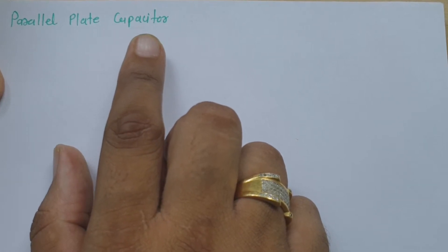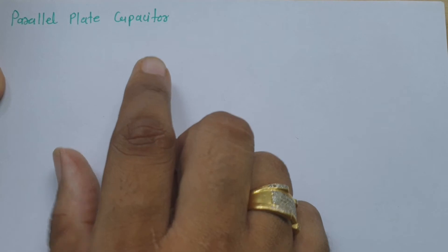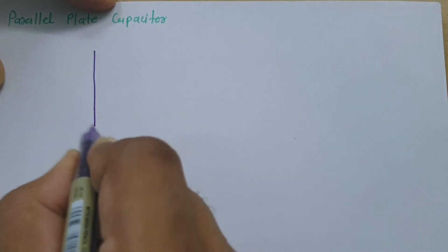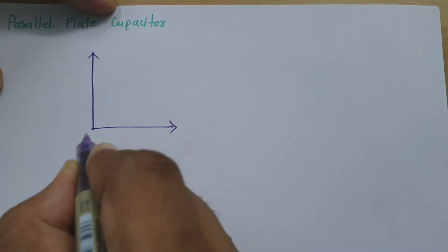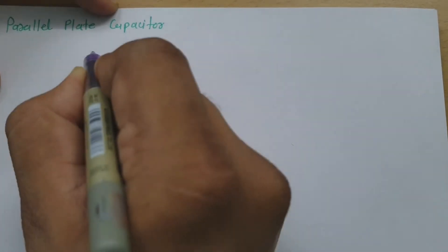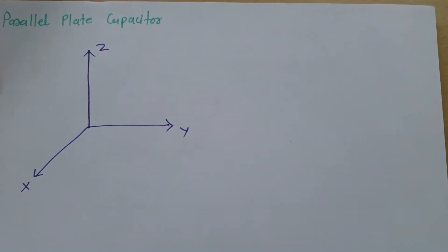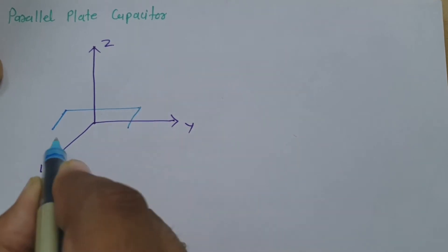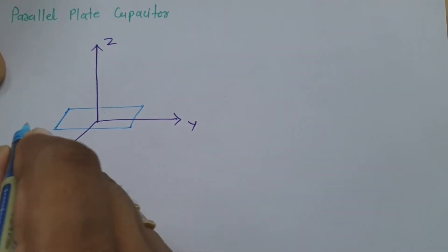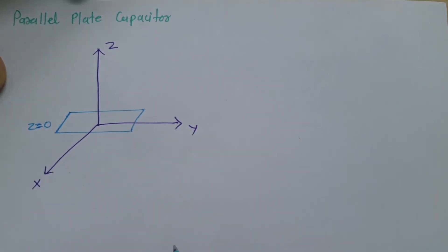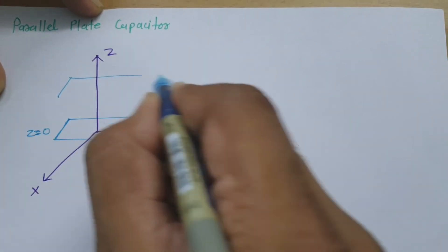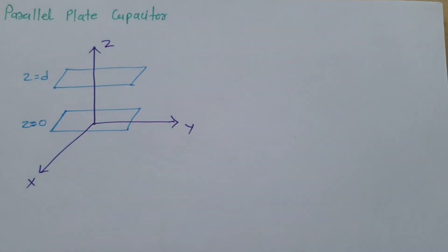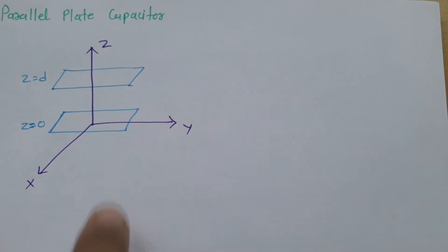Then I will show you how to calculate capacitance due to two parallel plates. Let us look at the geometry first. I am showing you the Cartesian coordinate system — this is x, this is y, and this is z. In this Cartesian coordinate system, I am showing the parallel plates with respect to the z-axis. At z equals 0, you can see one plate is there, and the second plate is at z equals distance d.